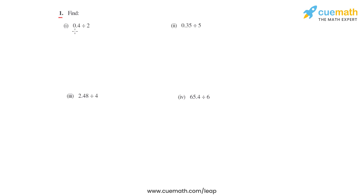0.4 can be written as 4 over 10, which is to be divided by 2. We can write this as a product of 4 over 10 and the reciprocal of 2, which is 1 over 2. Now 2 ones are 2 and 2 twos are 4, so we are left with 2 over 10, which is 0.2. So the answer for 0.4 divided by 2 is 0.2.